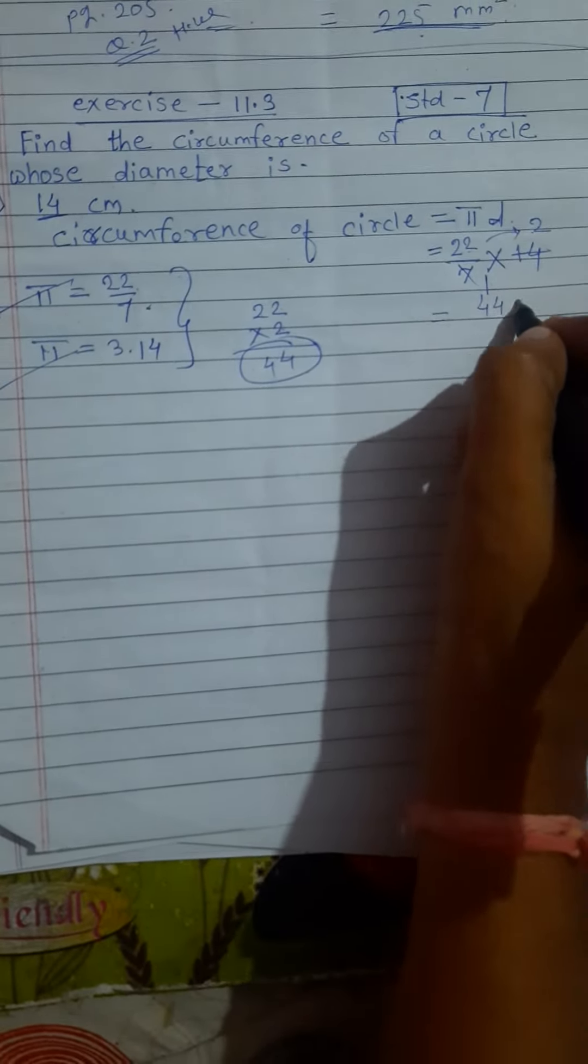So that is our answer and that is the circumference of circle. Understand children, it is very simple. First you have to learn that formula, circumference of circle is equal to π d, and value of π, 22 by 7 and 3.14.